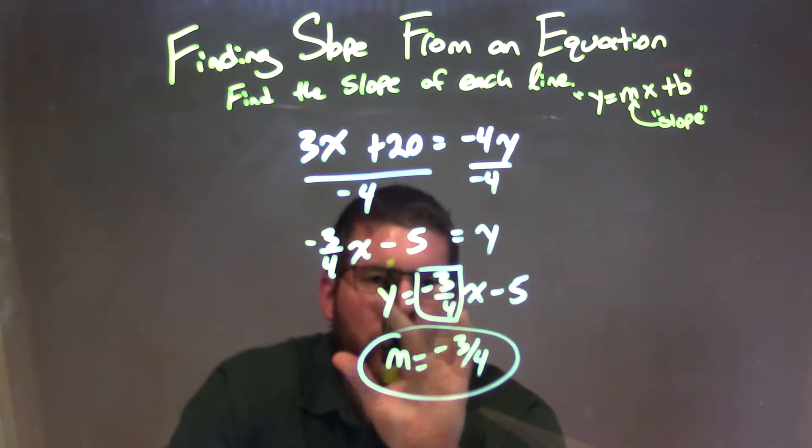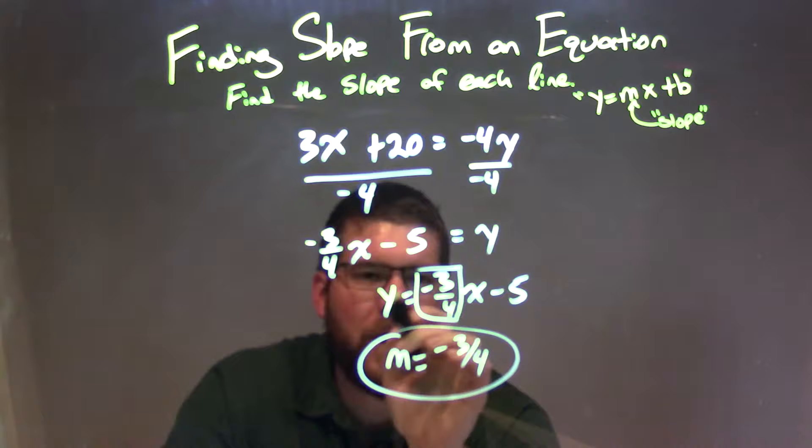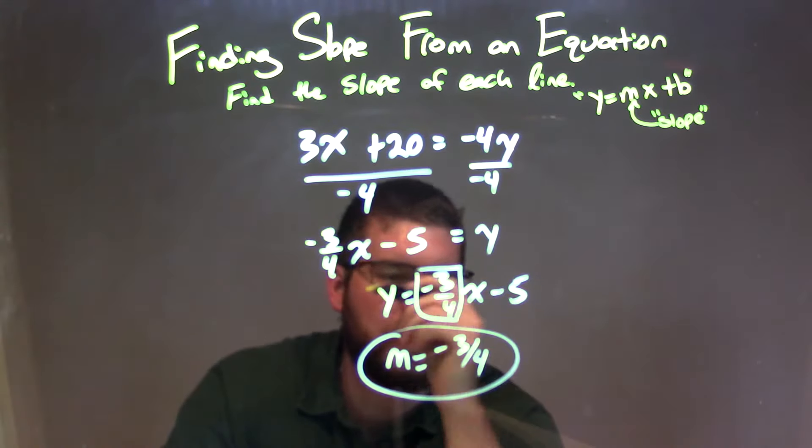Now, if you can't see it from there, we can flip it. Flipped the whole thing. Put y written first. And it's really rearranging. Y equals negative 3 fourths x minus 5. And now we can more easily see our slope intercept form.